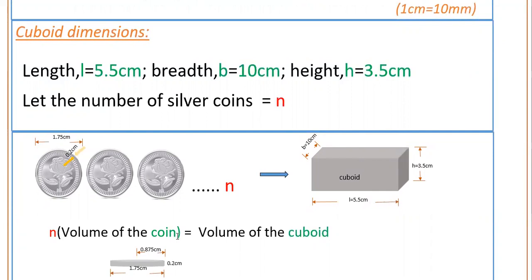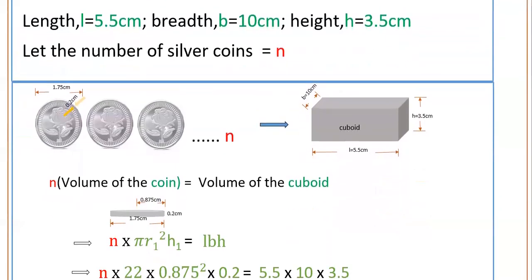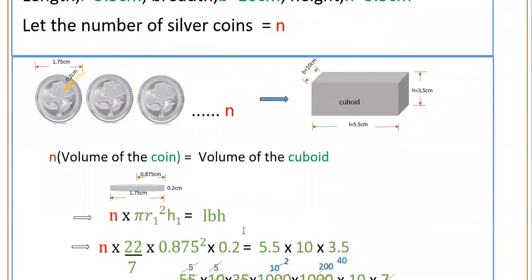So n times volume of one coin equals volume of the cuboid. The silver coin is in the shape of a cylinder. So n times volume of the coin, that is π R1² H1, equals volume of the cuboid, which is LBH.